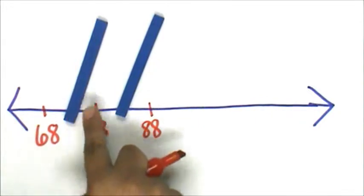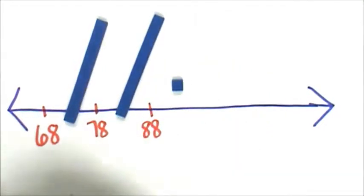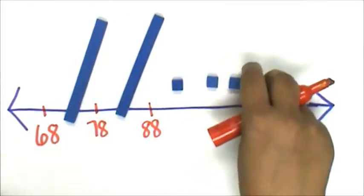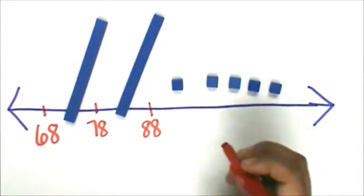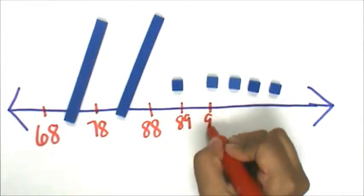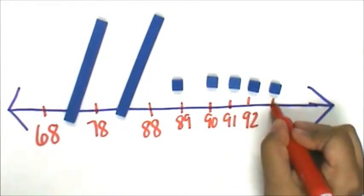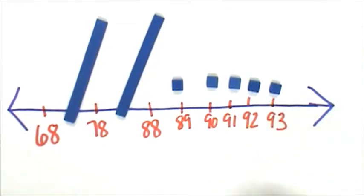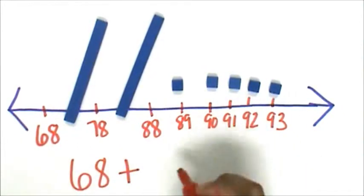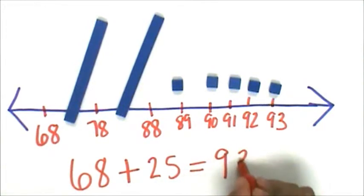That's 10, 20, 21, 22, 23, 24, 25. 88, 89, 90, 91, 92, 93. 68 plus 25 equals 93.